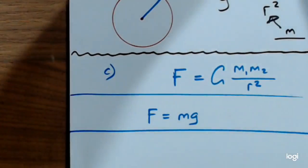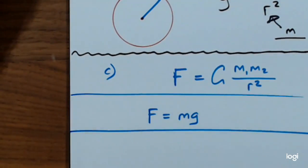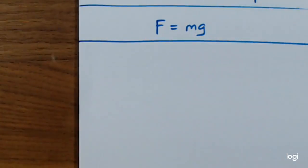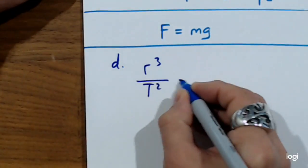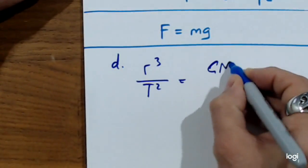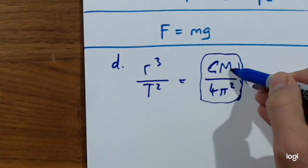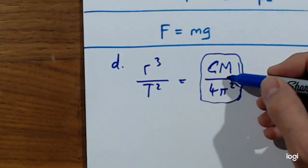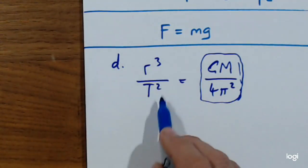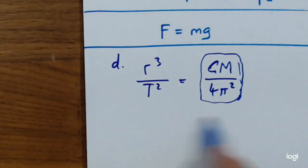Part D: determine the period of the International Space Station. For period, you need to use Kepler's third law: R cubed divided by T squared equals Gm divided by 4π squared. This whole thing is a constant because the mass of the Earth is constant, G is constant, and 4π squared is constant. So that is the same number for anything going around Earth. If you know the radius of something, you know how long it's going to take — everything at the same radius as the International Space Station takes the same amount of time to go around Earth.